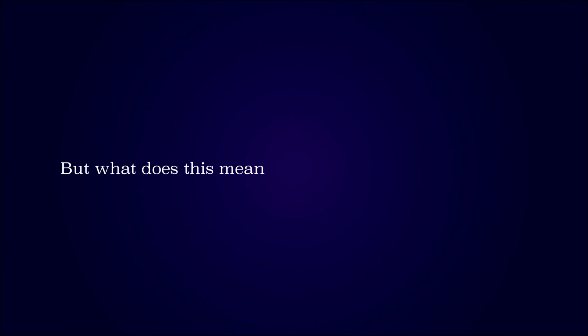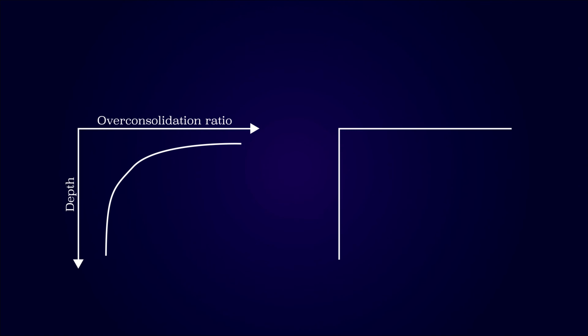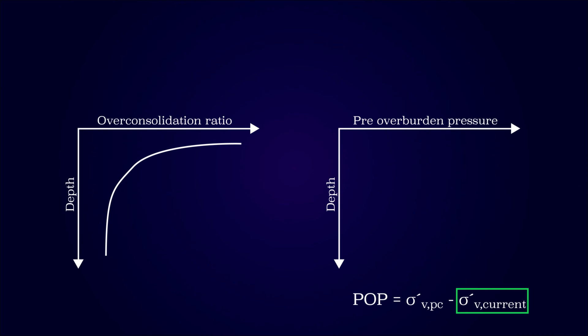But what does this mean for the overconsolidation ratio? If the overconsolidation ratio is plotted as a function of depth, it decreases. This is because the maximum and current effective stress increases the same, whereas the fraction decreases. The overconsolidation ratio is therefore a local description of the soil stress history. The pre-overburden pressure, on the other hand, takes the increasing effective stress with depth into account, which is why it would be constant throughout the whole soil volume. The pre-overburden pressure is therefore a more accurate way to describe the soil stress history and behavior as a whole.